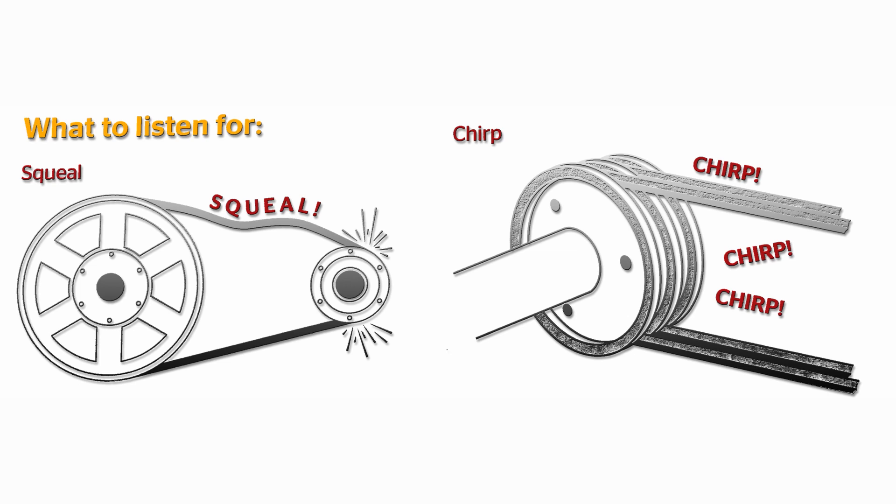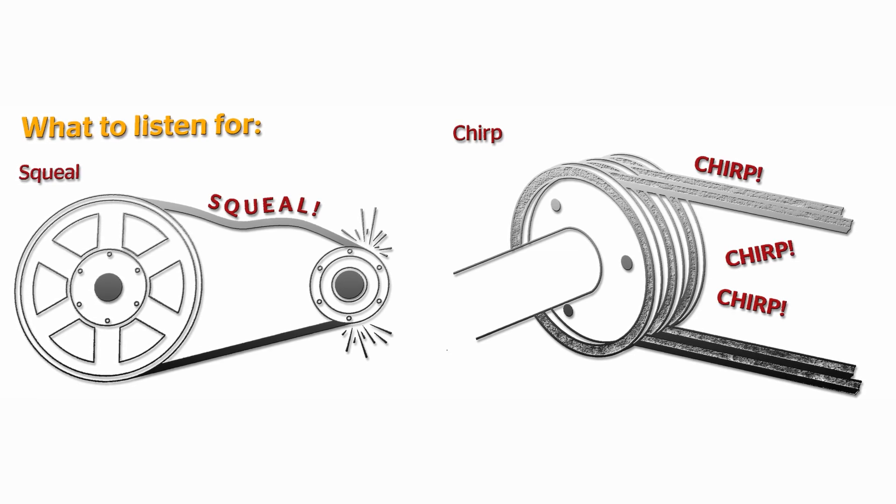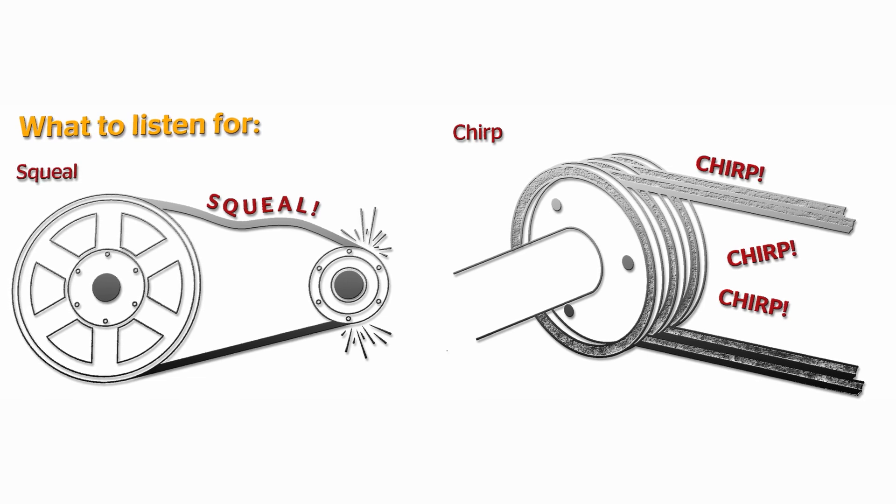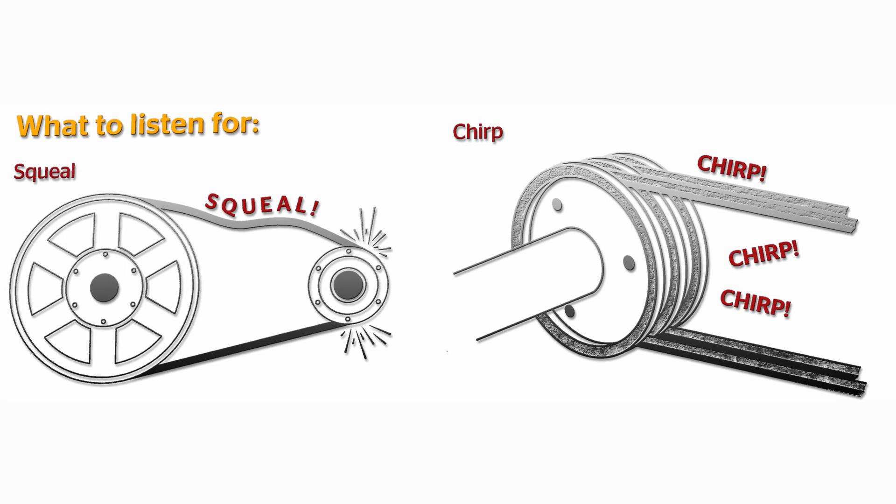Another good indicator that something is wrong with your transmission belt is a squealing or chirping noise. A squeal sound is usually the result of inefficient belt tension, whereas a chirp might indicate the idler needs to be realigned.